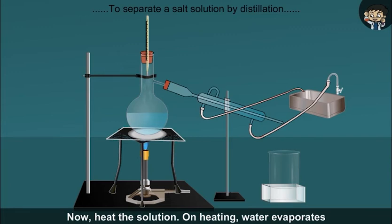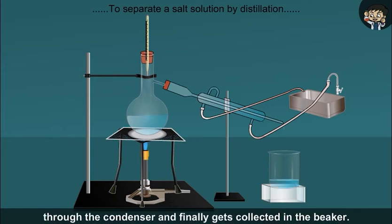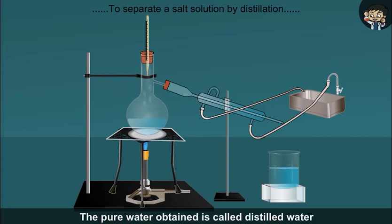On heating, water evaporates and rises up in the form of vapor. These vapors get condensed back into liquid water on passing through the condenser and finally get collected in the beaker. The pure water obtained is called distilled water, which is a pure form of water.